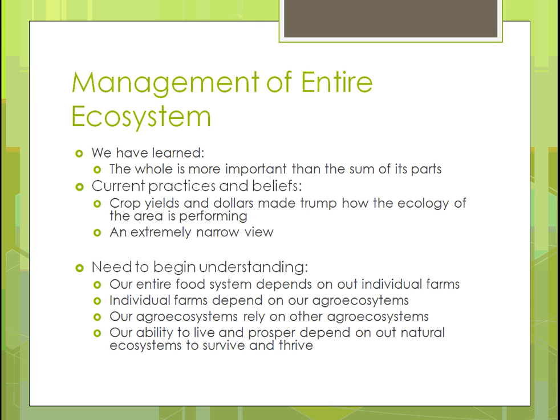To begin our understanding, the food system we have depends on all the individual farms out there. Individual farms depend on our agroecosystems — the natural area we're in is going to affect them, and what we do on our farm affects that. Agro systems rely on other agro systems, so that regional idea means different areas have to work together to get one agroecosystem functioning, especially when they're in differing types and working against each other. Our ability to live and prosper is going to depend on our natural ecosystems surviving and thriving.